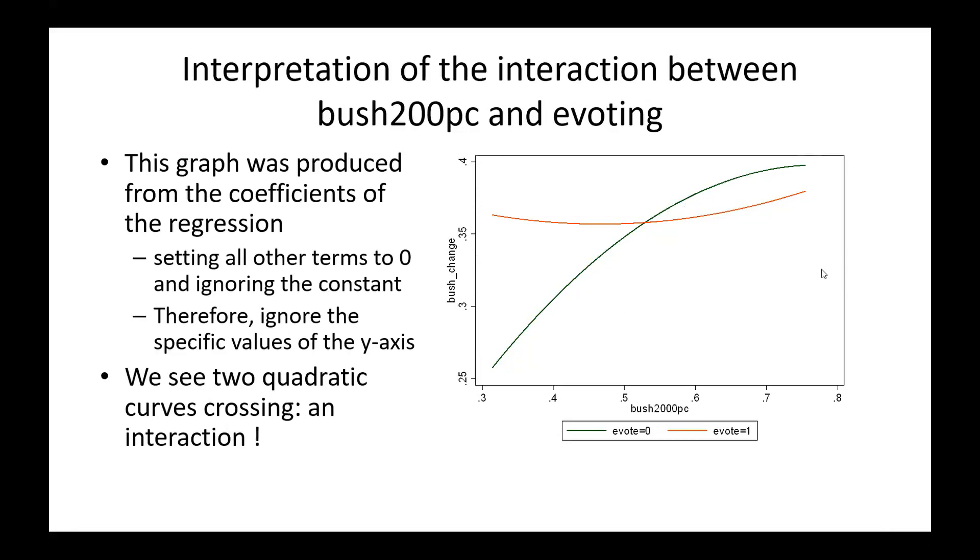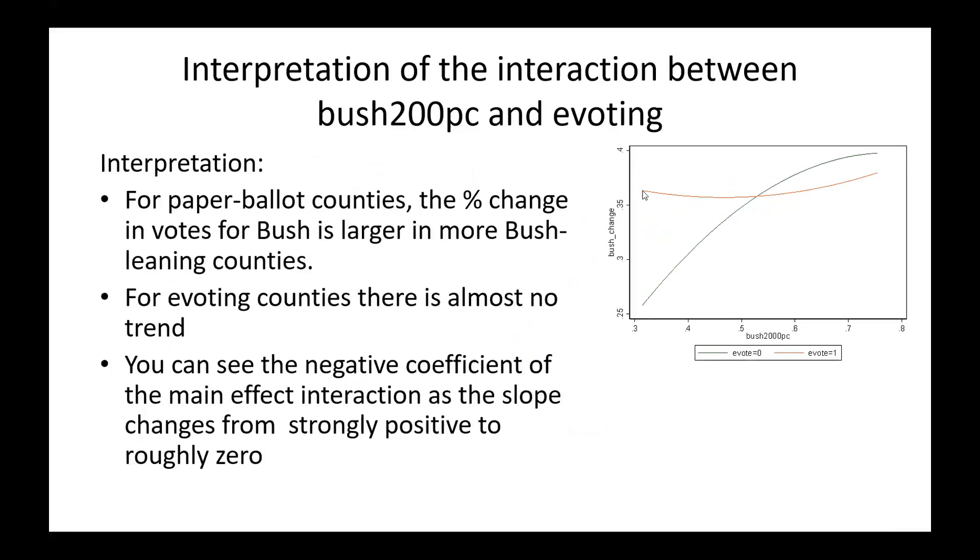The other thing we see is that for e-voting counties, the red line, there's pretty much nothing happening here. It's a mild curve, but really, from a linear point of view, if I was doing a straight line, it would be a coefficient almost zero. And here I have what looks like a substantial increase. Given that e-vote equals zero for this, I'm going from a substantial slope to a zero slope. So I'm reducing this, and that corresponds to a negative interaction.